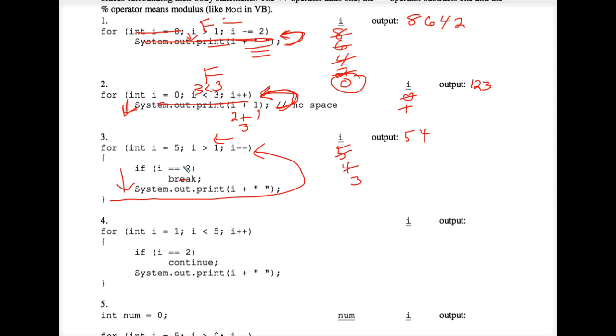3 is still greater than 1. The if statement is false, so we system out print 3. We loop back up to the top. I goes down to 2. 2 is greater than 1, so we go through the for loop. We check the if statement as we must because it's right here at the top. I is indeed equal to 2, so we do break.